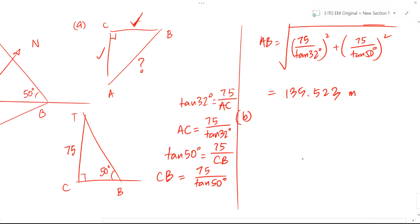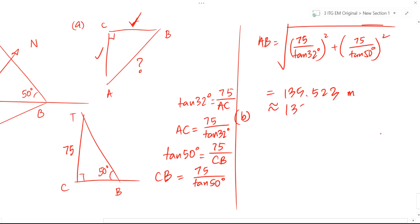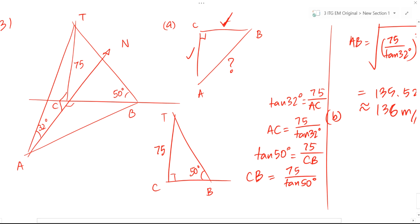And next for part B. The bearing of A from B. Where do I put my compass? A from B. So, where do I put my compass? B. That means my north arrow must be at B. I have to draw it parallel to the current north arrow that is given to me. And then the angle will be as such.